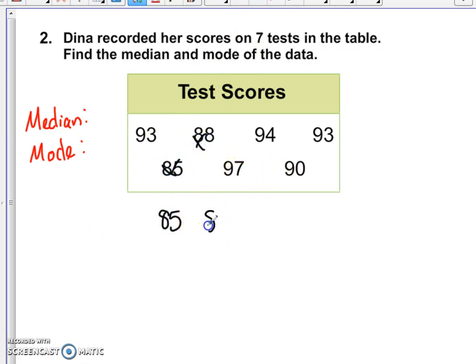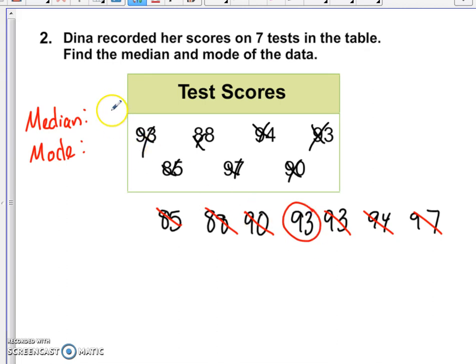So our smallest number here is 85. Then we have 88. Then we have 90. We have two 93s. We have a 94, and we have a 97. Now what we want to do is start to cancel them out, the outside values. Work your way in. And it looks like we've canceled three out on the left, three on the right, which means our median is 93.